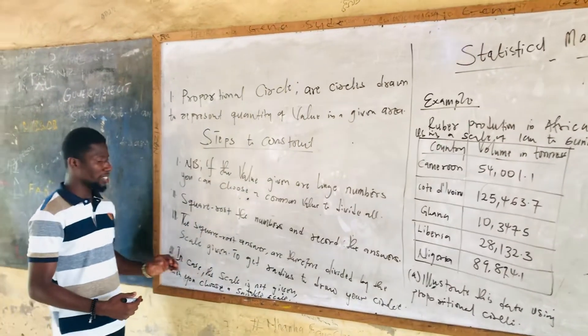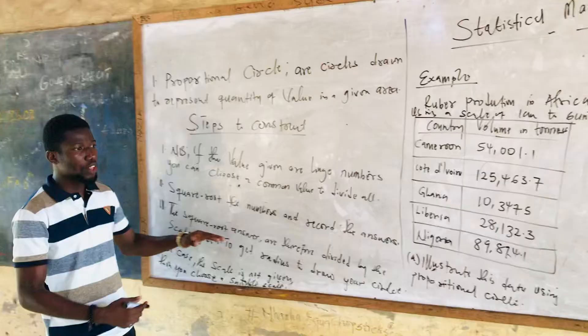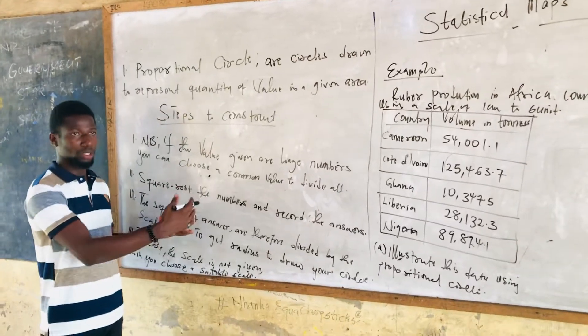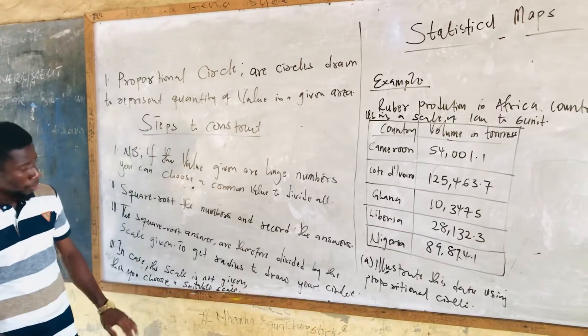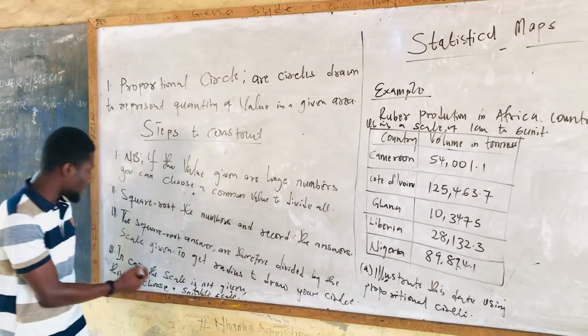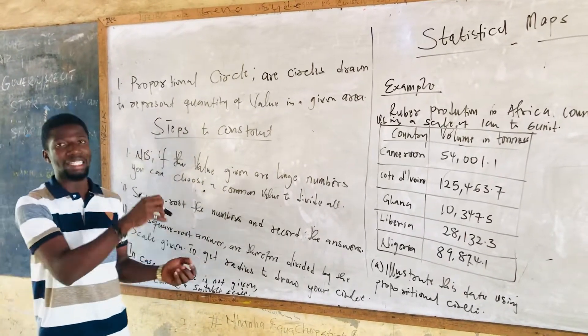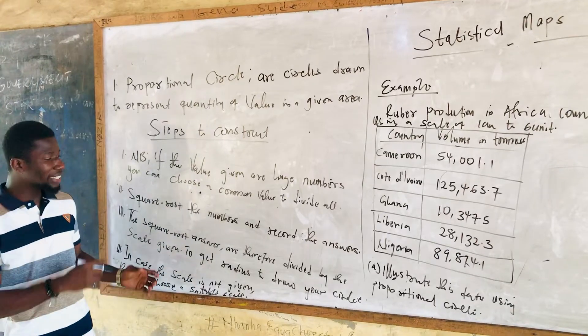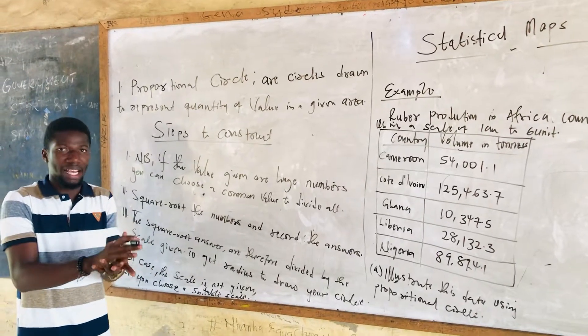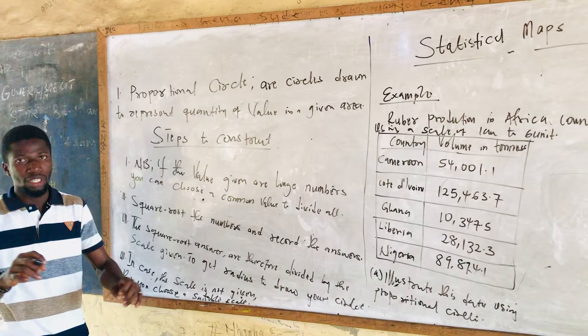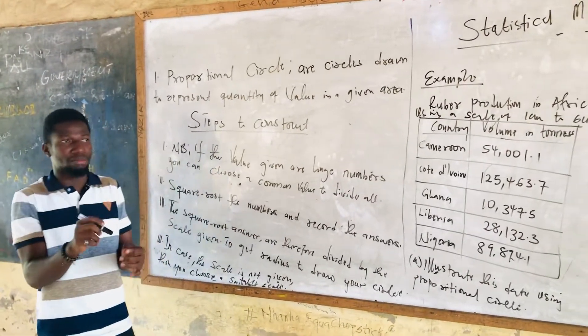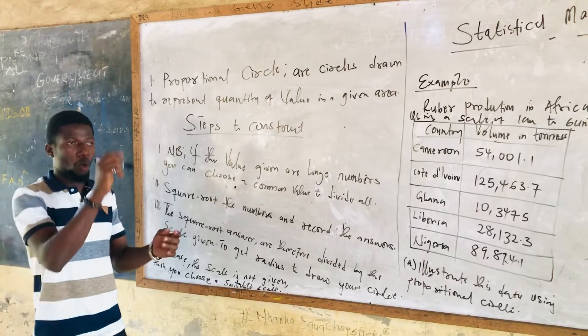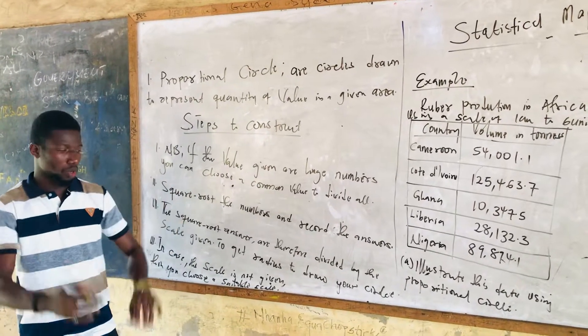The third step is the square root answers. After we have square rooted the results, the square root answers that we have recorded, we will now divide by the scale given to us in the question. Example of the scale can be one centimeter to two units or one represents four units as well.